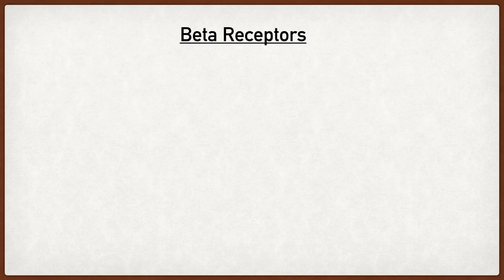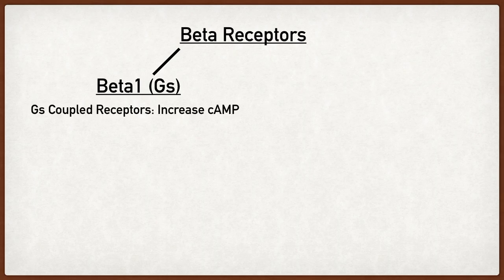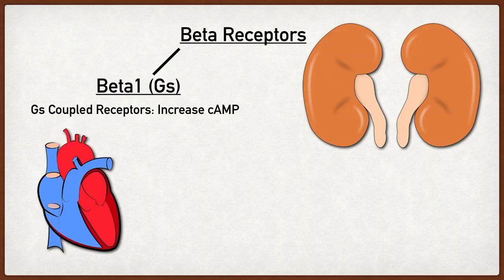Now that we have a good understanding of how adrenergic receptors are involved in the sympathetic nervous system to generate a fight-or-flight response, let's talk about the different types. There are two main types of adrenergic receptors: alpha and beta. We're going to focus on the beta receptors in this video. There are three main types of beta receptors: beta 1, 2, and 3. All beta receptors are coupled with GS proteins which ultimately increase cyclic AMP levels. Beta 1 receptors are primarily located in the heart and in the kidneys.